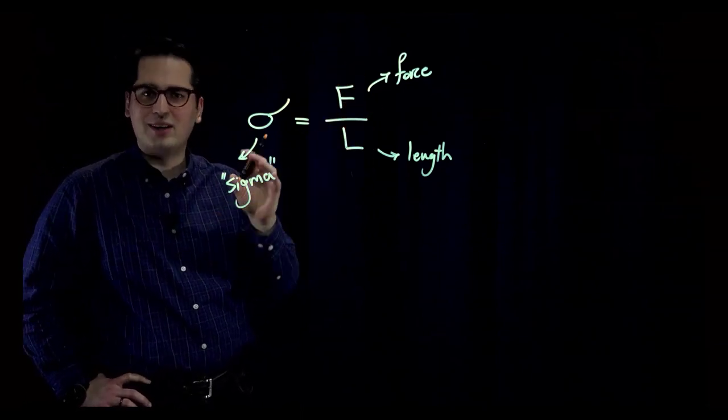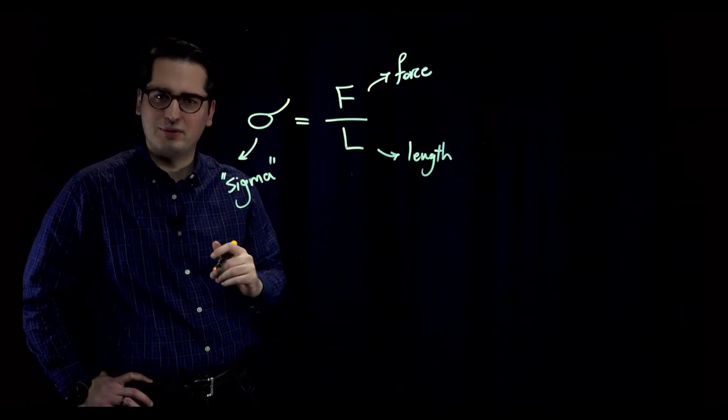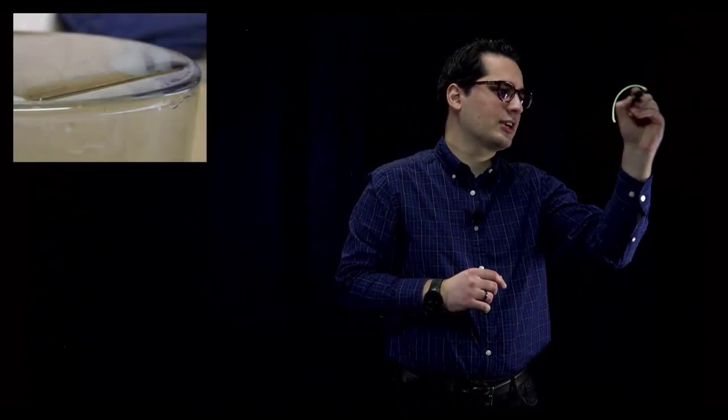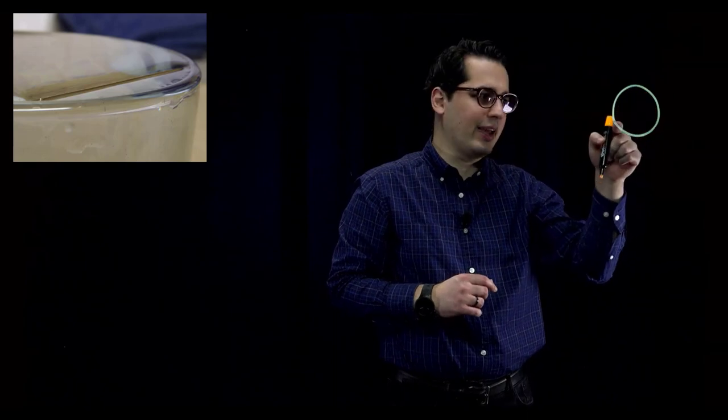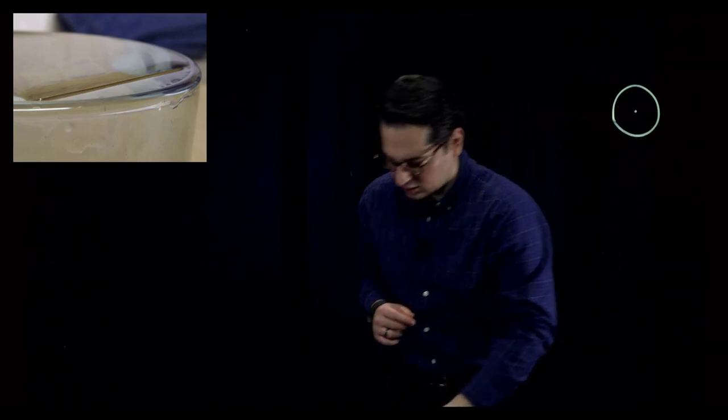Mathematically, sigma or surface tension is defined as force per unit length needed to separate the molecules on the surface of the fluids. Let's talk about an example: what is the heaviest needle that can stay on top of water without sinking? First step is to sketch the diagram — this is the cross section of a circular needle and this is the center of that needle.